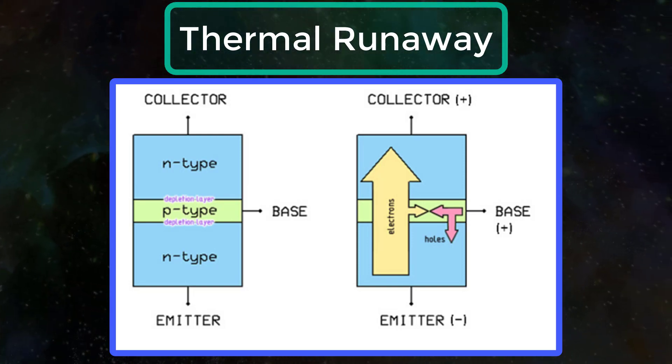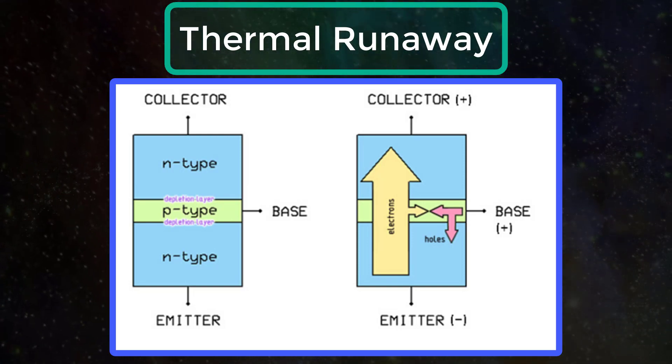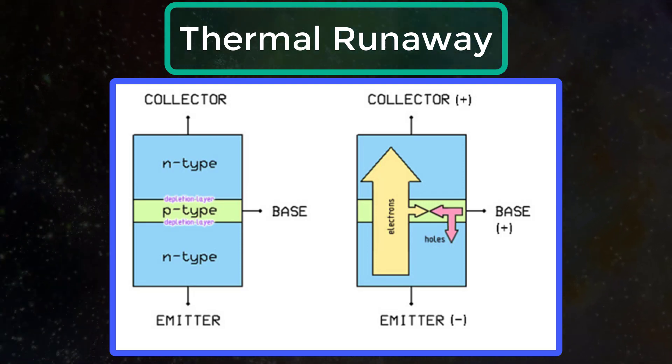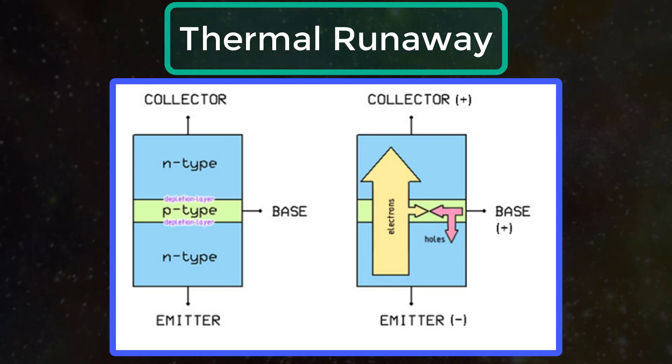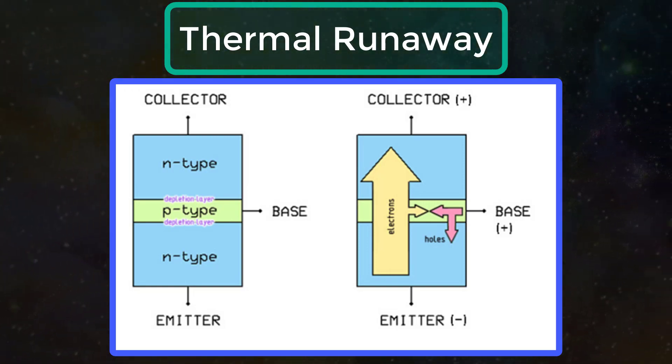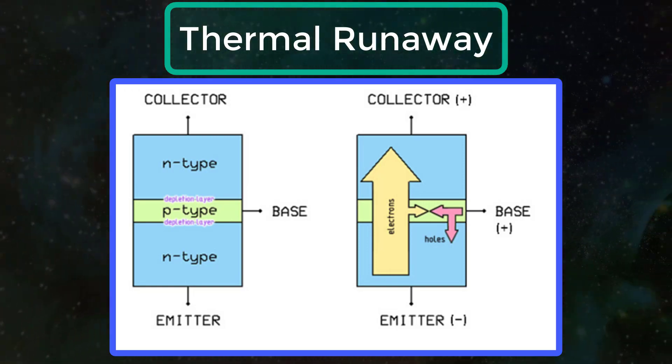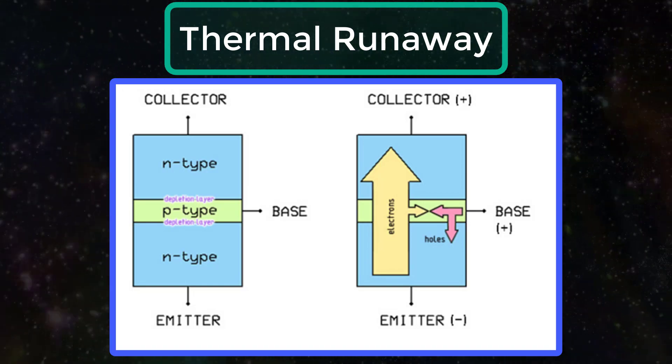As the temperature at collector base junction increases the reverse leakage current ICBO increases. This is because ICBO arises due to the flow of minority carriers which are thermally generated across reverse biased collector base junction.